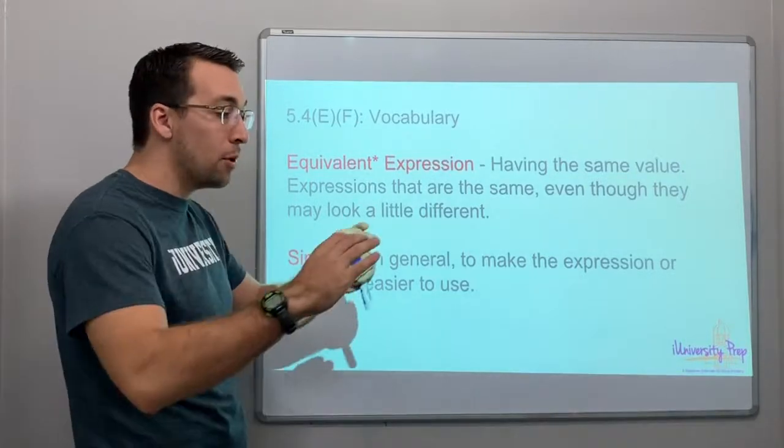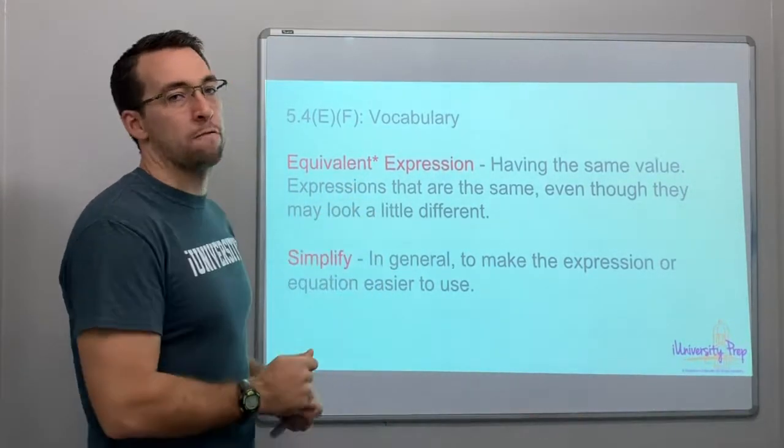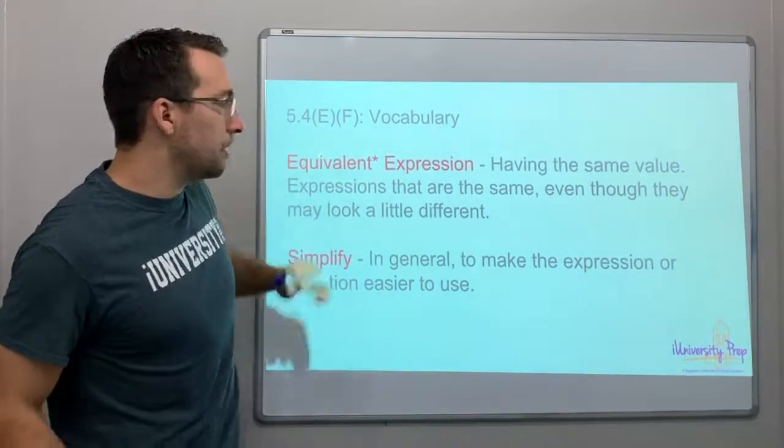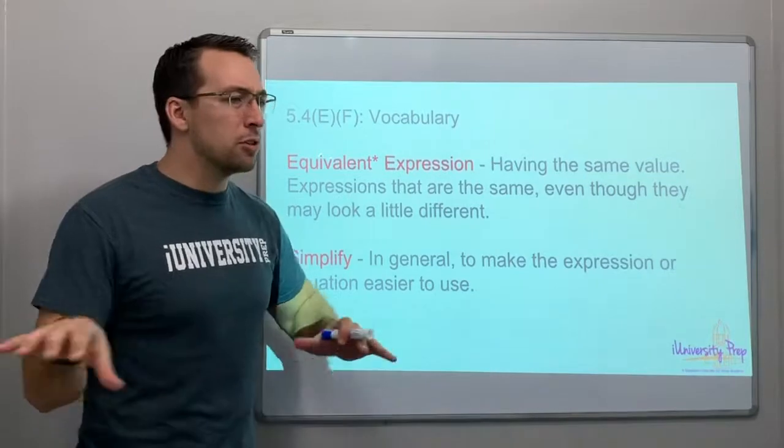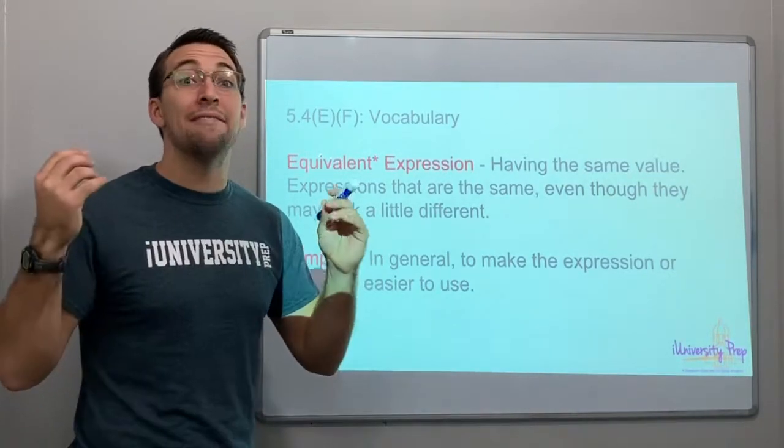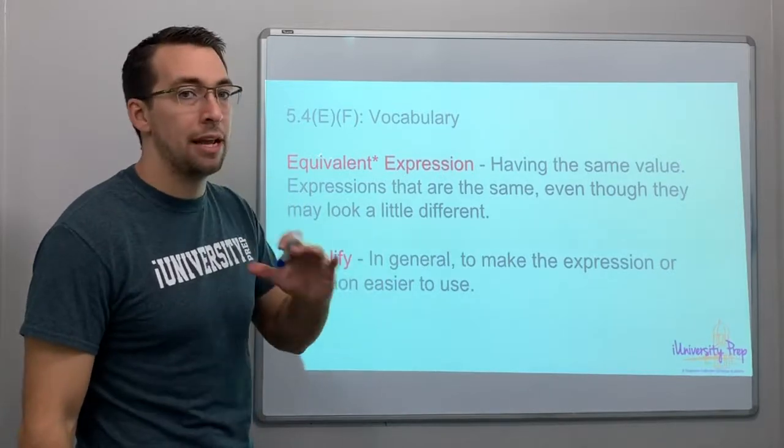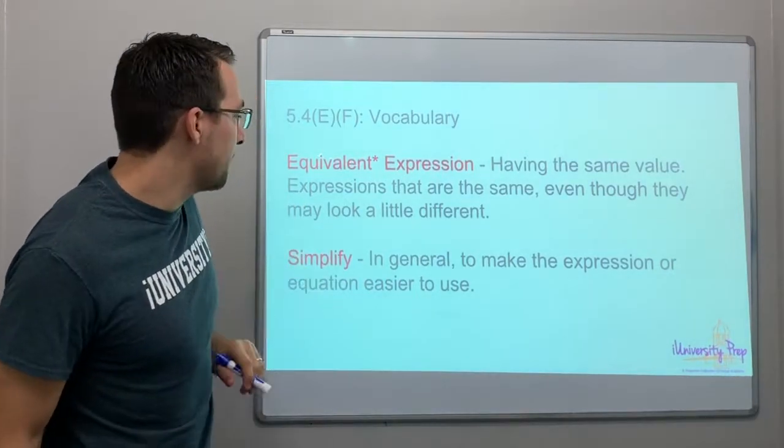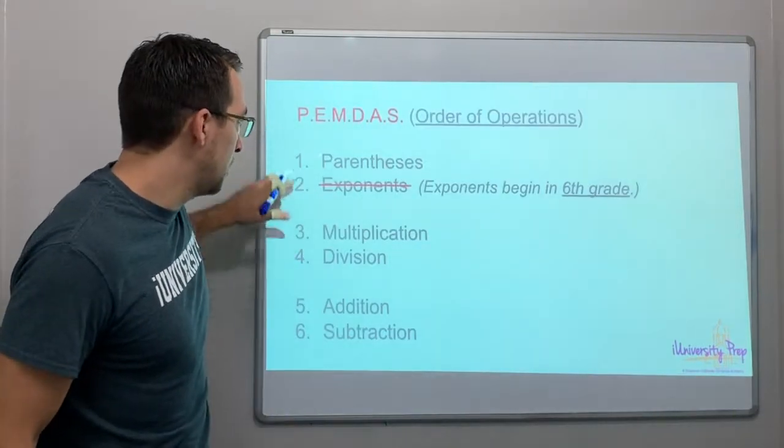Brackets and parentheses are the same thing - they're groupings. Anytime you have a grouping of an operation or numbers, do that grouping first. Equivalent expressions are two expressions that look different, maybe the numbers are in different order or whatever, but they have the same result. They equal the same amount. Simplify means to make the expression or equation easier to use.